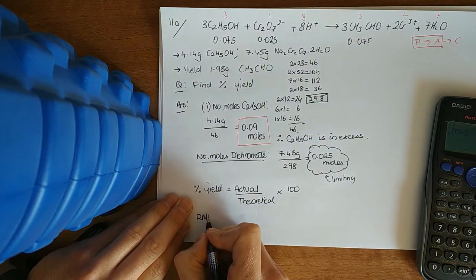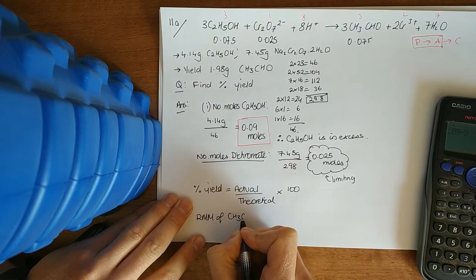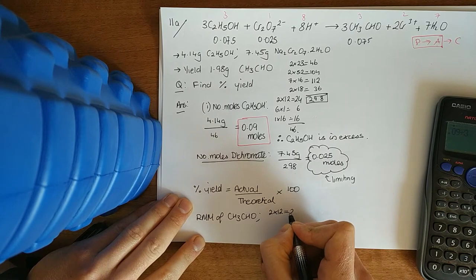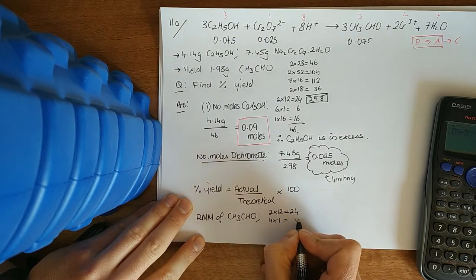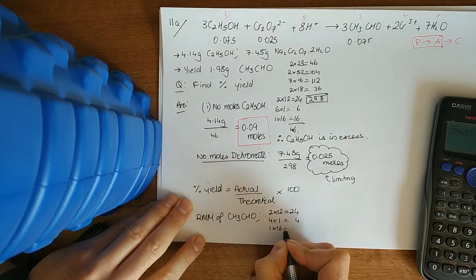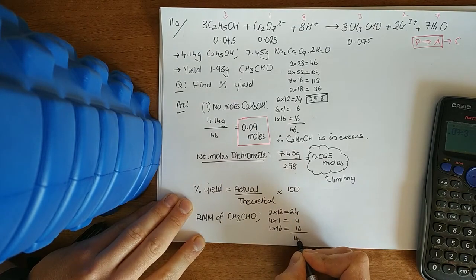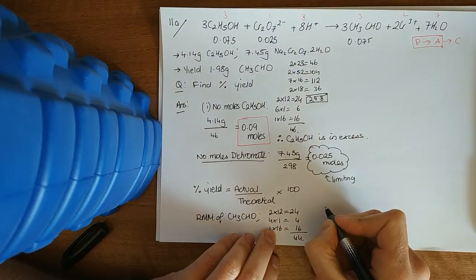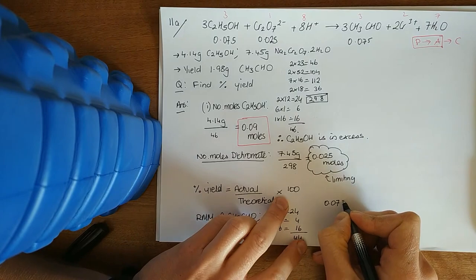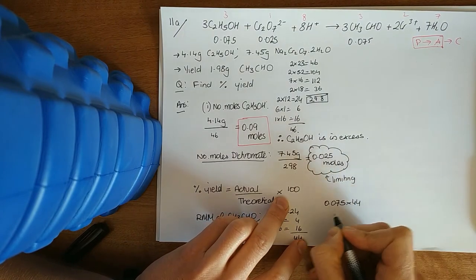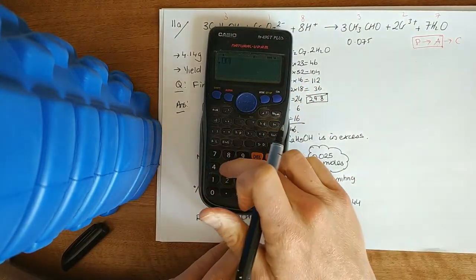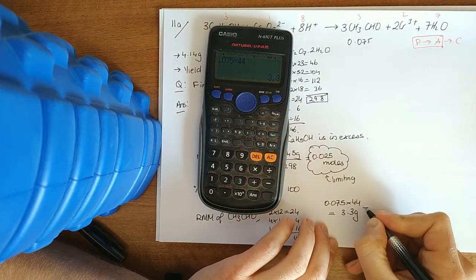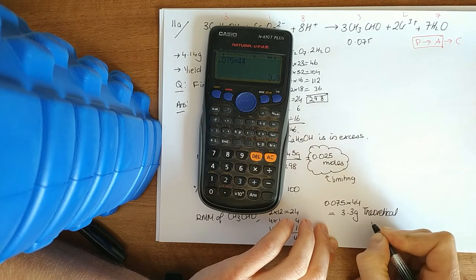So, the RMM of ethanal. Two carbons. Four hydrogens. One oxygen. 44. Now, to get the yield of that. 0.075, which would be number of moles, by 44. That's 3.3 grams. Theoretical yield.